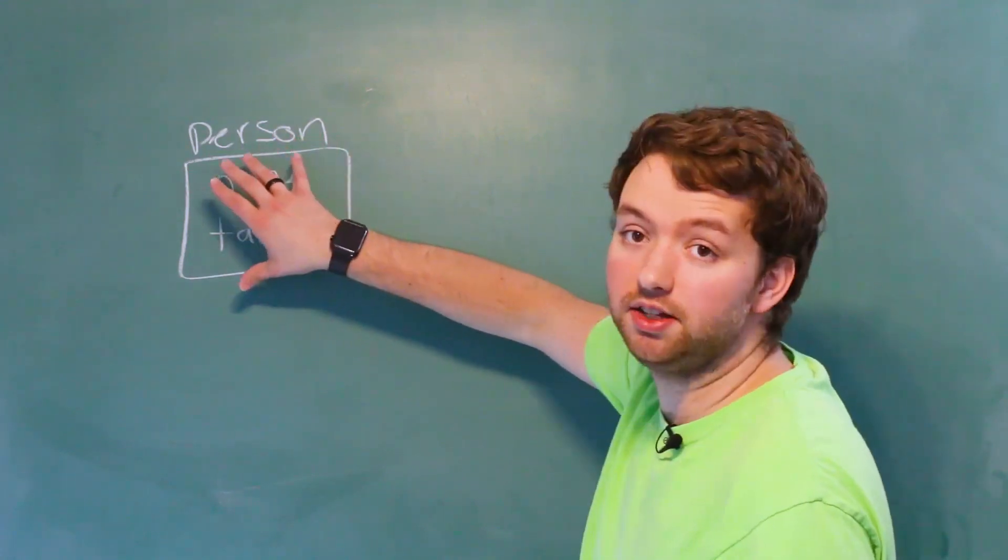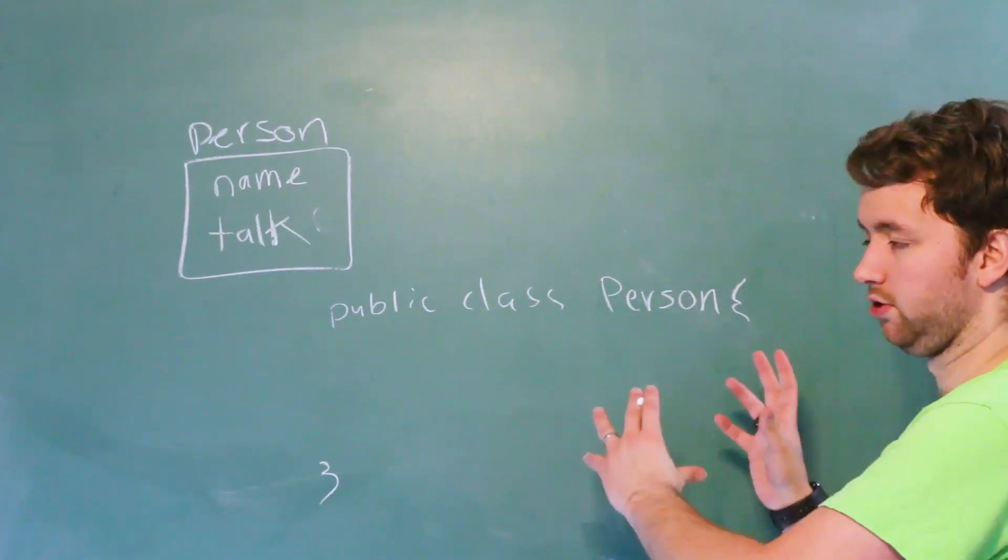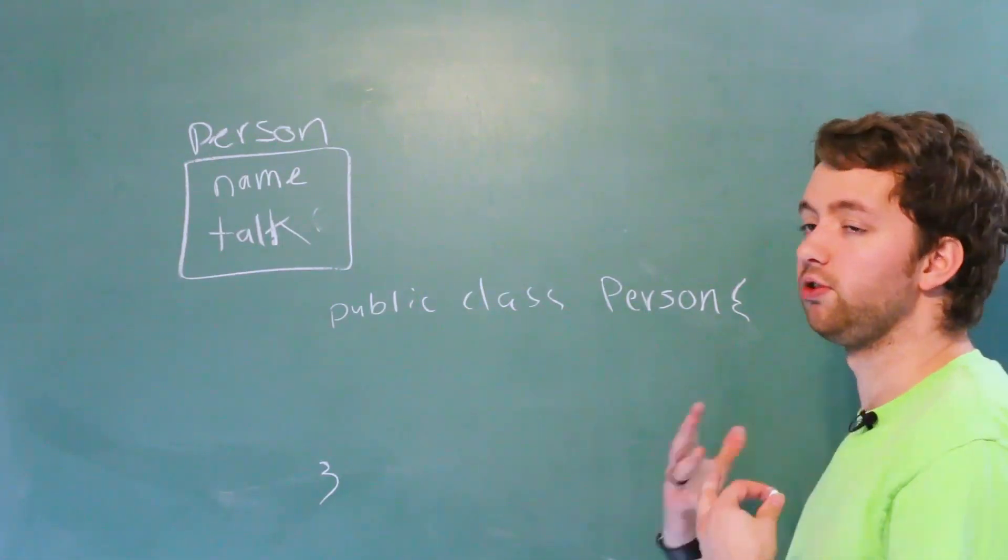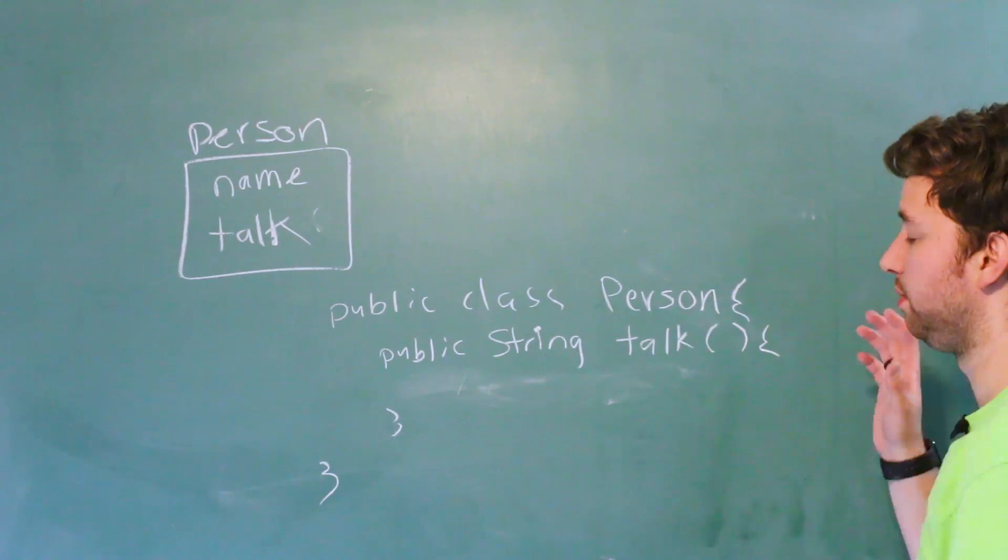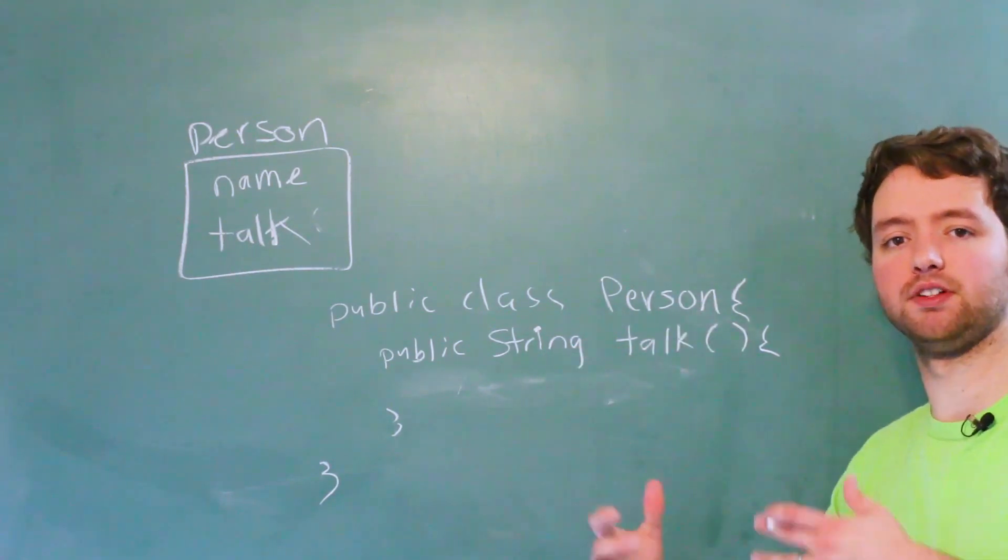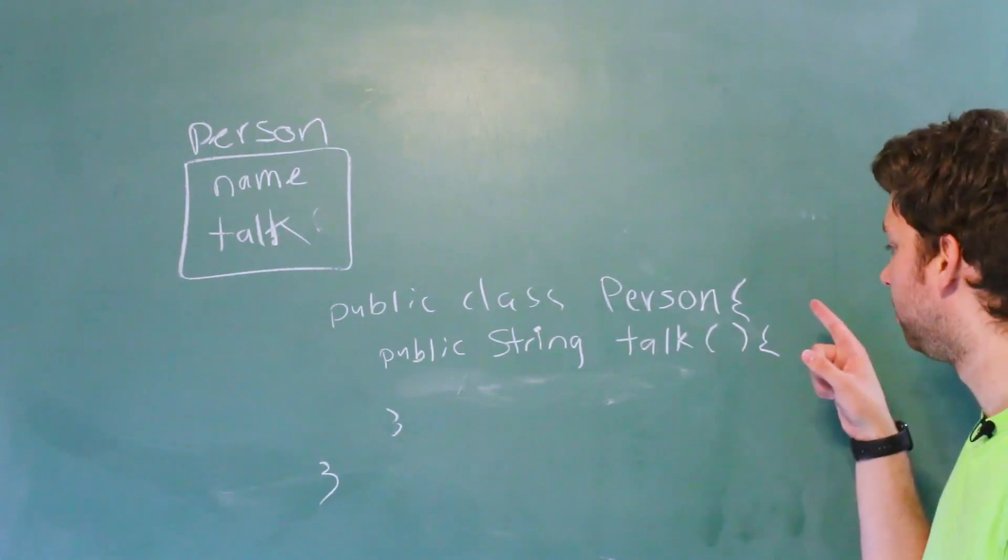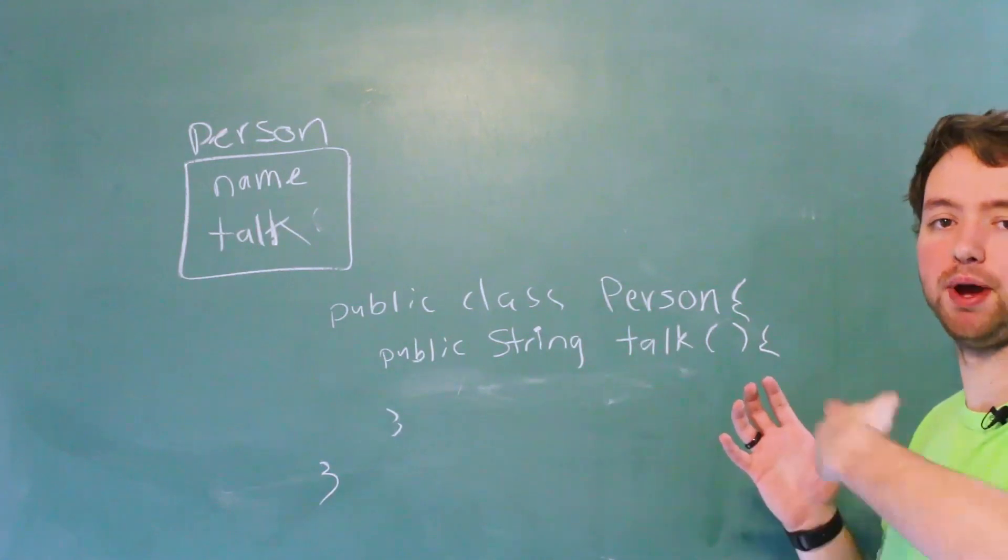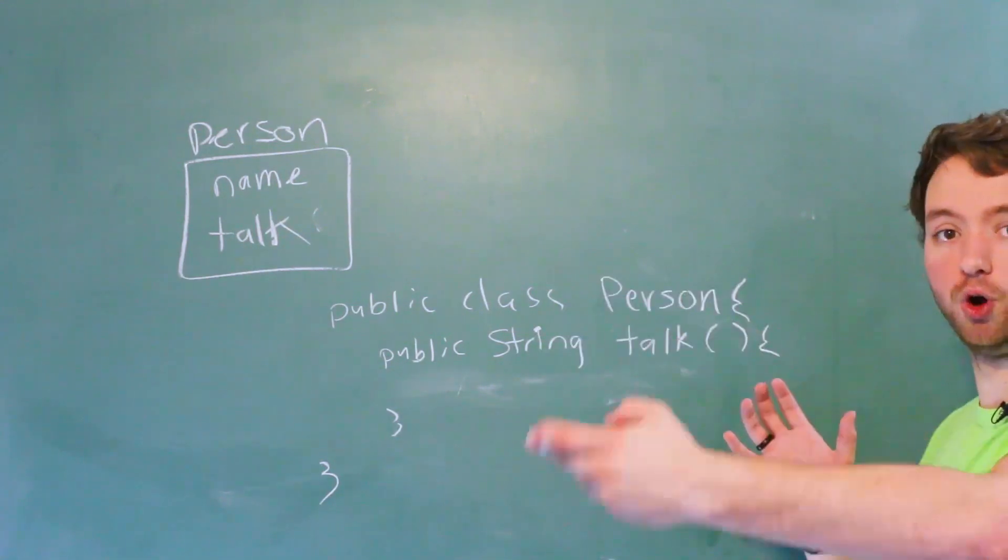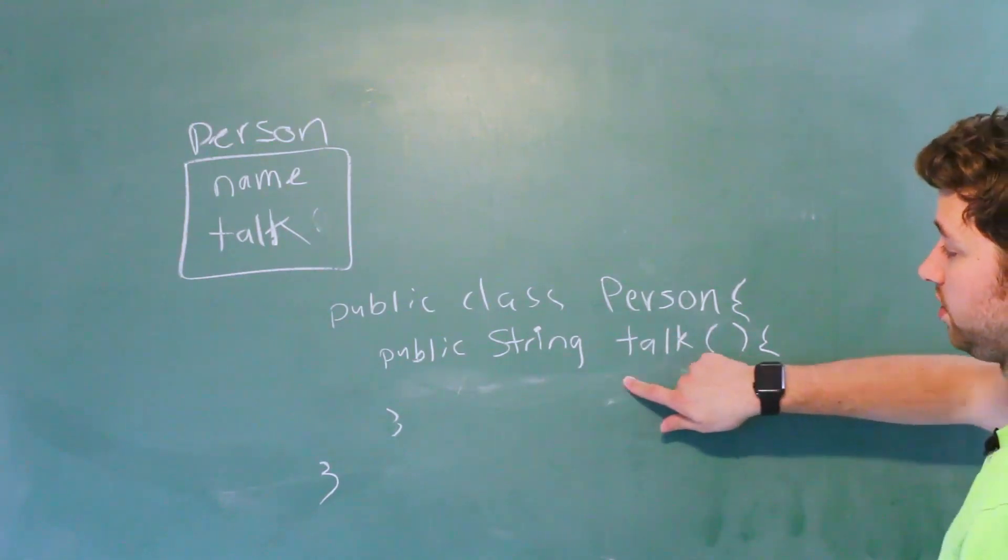So how would we define something like this? Well, inside of a class, this is our class structure. We would create this in some file. We would create a method, and it might look like this. So right now we have an empty method. We say the return type, so this is going to give us back a string. We give it a name, such as talk. We put the parentheses, which is where we would put any parameters, so anything we expect to get passed in as input, as arguments. Then we open and close the body, and our code goes here.